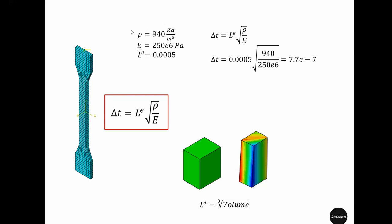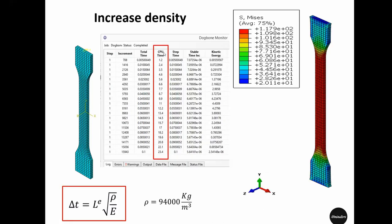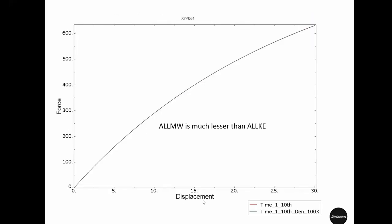In many cases, increasing the density artificially by some margin will not affect the simulation result significantly. So let's try putting the density to be 94,000 kg/m³. If we put that density in our material definition and run the same simulation, the CPU time becomes only 23 seconds due to the density increase. We then plotted the force-displacement response for the regular density model and the 100 times larger density model.